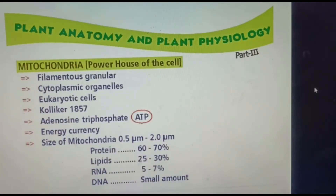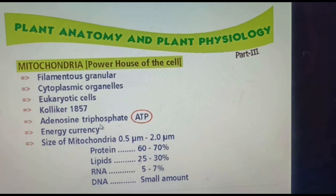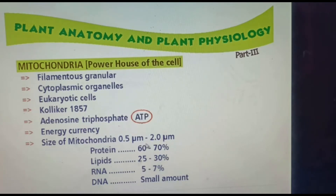Today we are going to discuss about mitochondria. Mitochondria is filamentous or granular in nature — it is a cytoplasmic organelle present in the cytoplasm of eukaryotic cells. Mitochondria was discovered in 1857. It produces adenosine triphosphate, ATP, and is called the powerhouse of the cell and the energy currency. The size of mitochondria is 0.5 to 2.0 micrometers.